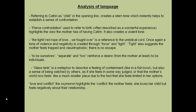Later in the poem, the metaphor 'glass tank' is used to create a sense of feeling contained — like a fish in a bowl — but also a sense of being watched by others. It is as if the mother feels judged in some way, or that the mother's world now feels much smaller due to the fact that she is limiting her options. Finally, 'love and conflict': this oxymoron highlights the conflict the mother feels — she loves her child, but at the same time feels negatively about their relationship. This is an overarching theme.